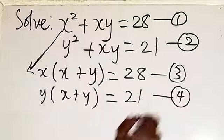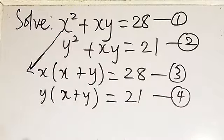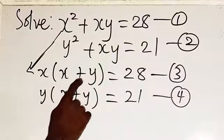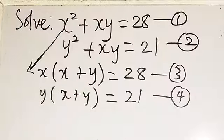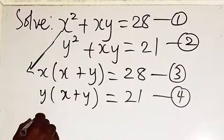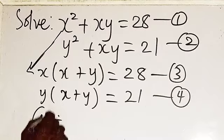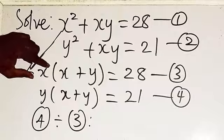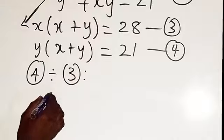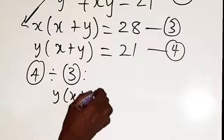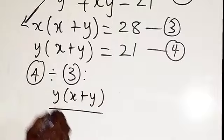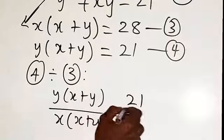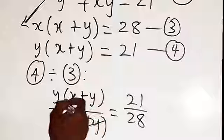Let's label these equation 3 and equation 4. We can see that (x + y) is common to both equations. So we are going to divide equation 4 by equation 3: y(x + y) over x(x + y) equals 21 over 28.